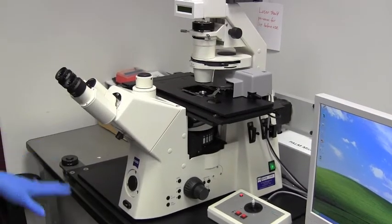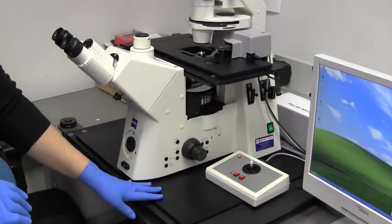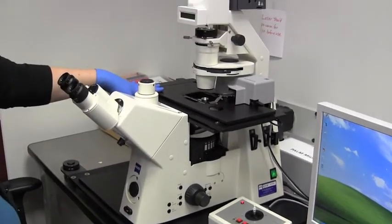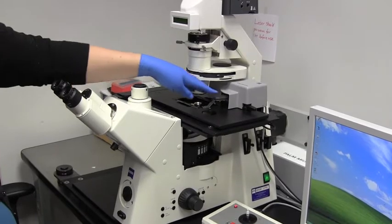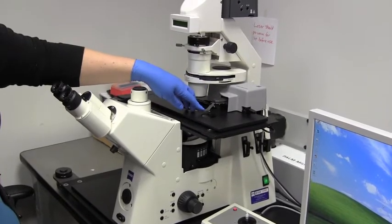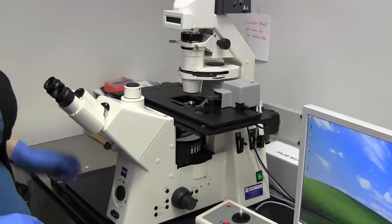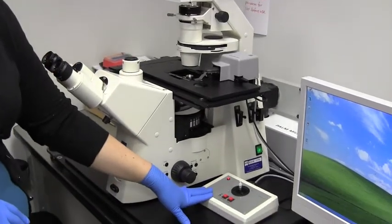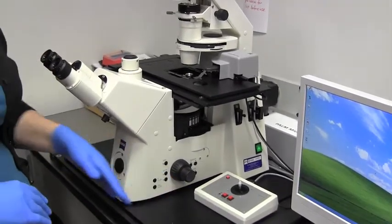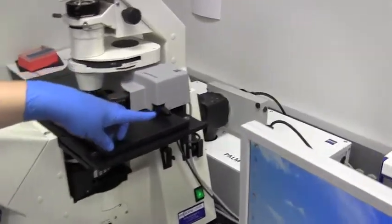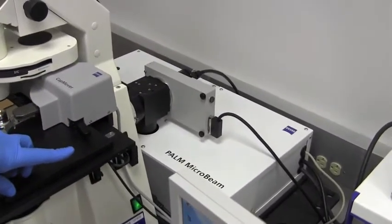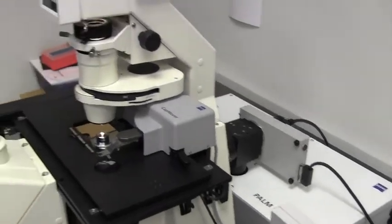Now the microscope itself rests on an air table for stability. It's equipped with a mechanical stage that's computer controlled. A cap holder, which is what we put our samples into, which the laser shoots up into. The stage is controlled by this joystick here. And in the back you can see the actual microbeam, which is a UV laser specially attached to this system. And that does the cutting.